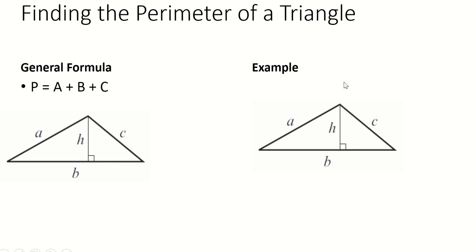Working with an example, let's suppose A is 5, C is 6, and B is 8. How do we find the perimeter? Simply take 5 plus 6 plus 8, which is 19. You're just finding the total distance around the triangle.